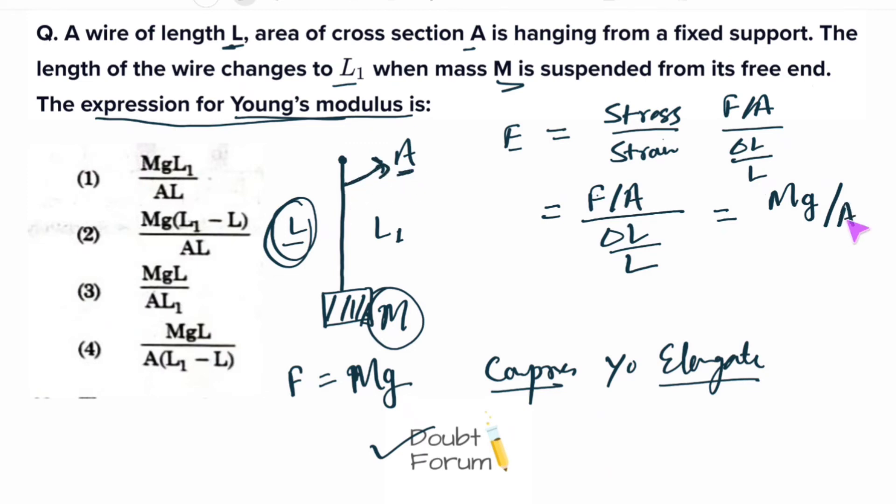Divided by ΔL, which is the change in length. Initial length was L and after the suspension, length has become L₁. So here L₁ is greater than L. So the change in length will become L₁ minus L.